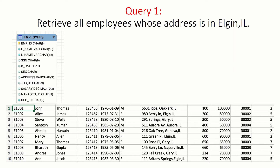Our first query is to retrieve all employees whose address is in Elgin, IL. We are supposed to retrieve the names of employees from our employee table who have that address. This is a very simple query — we need only the name of the employee as output, and the condition is just one: the address.